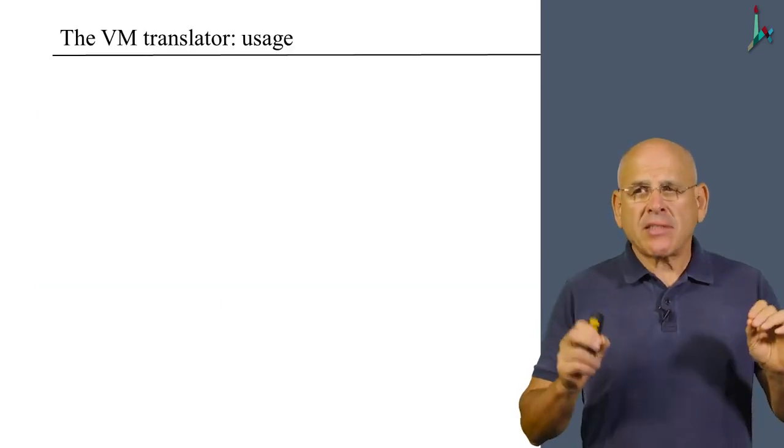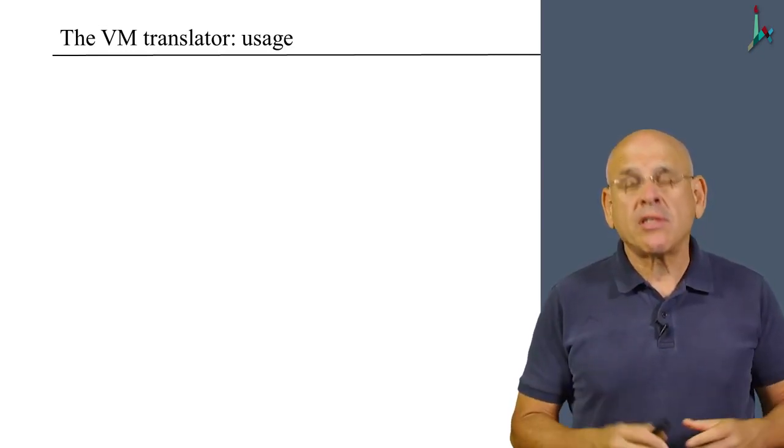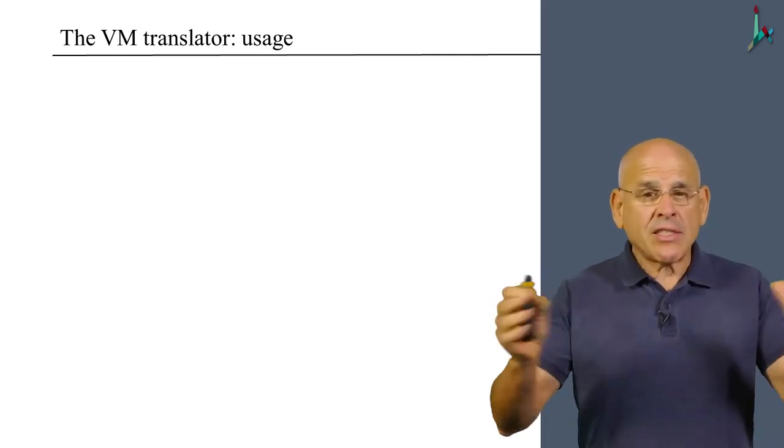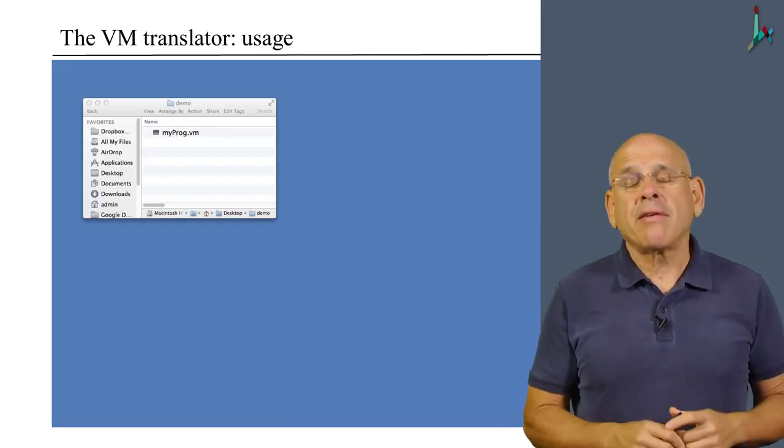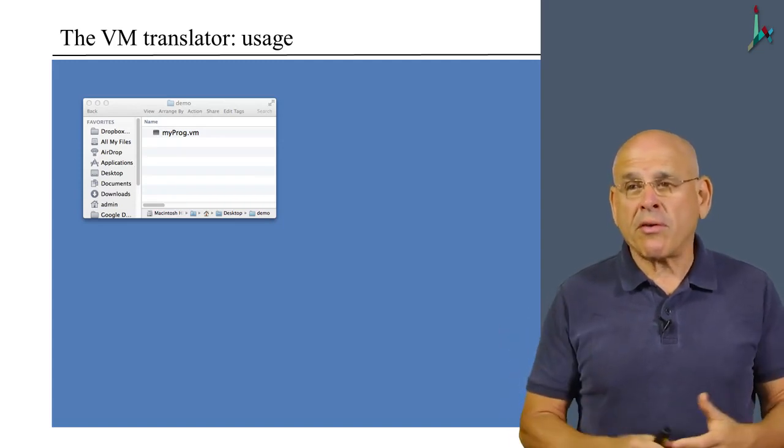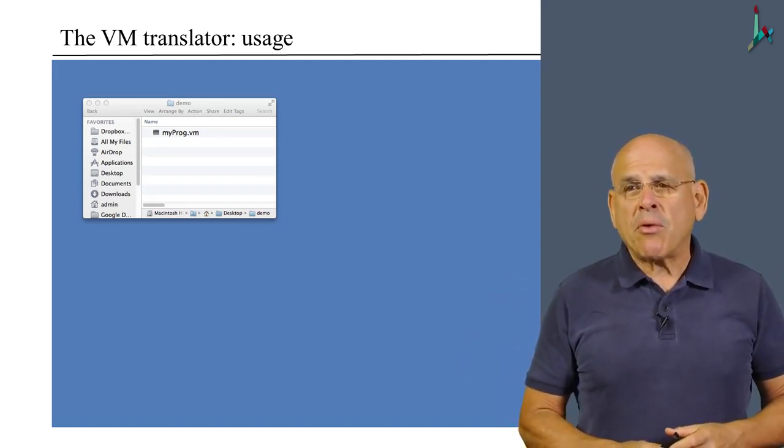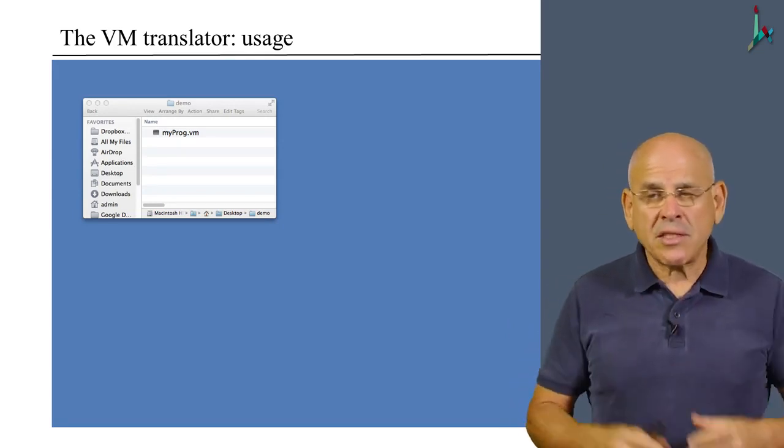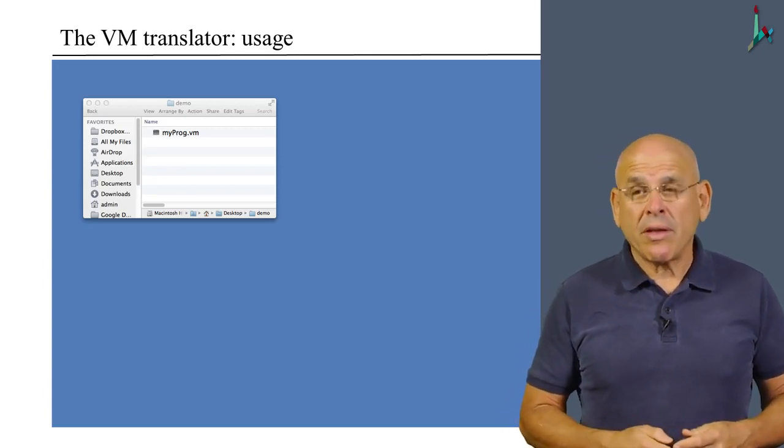What I would like to do next is show you how this VM translator will be used once you end up writing it. So let us assume that we've implemented a VM translator and we want to apply it to a particular VM program that we wrote before, either a test program or some real program. And now we seek to translate this program into assembly code. How do we do it?